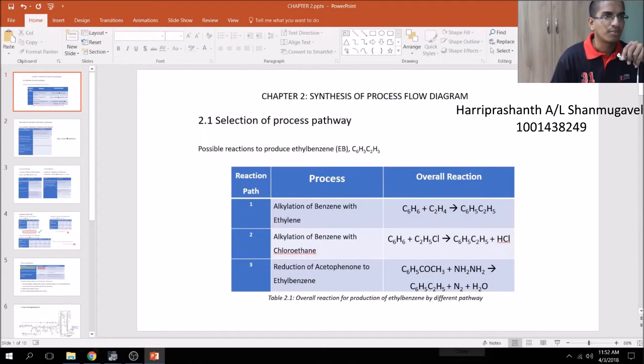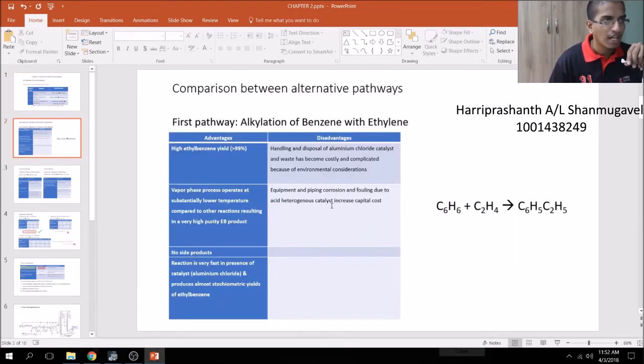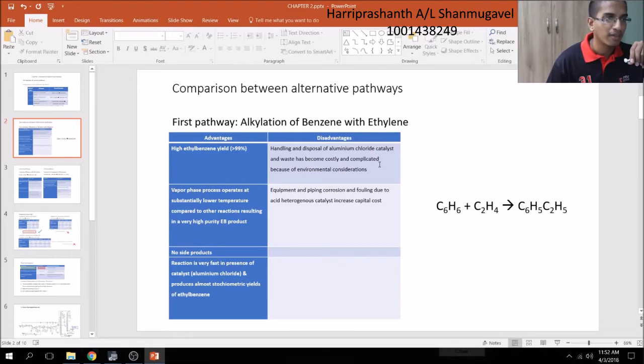Now I'll be talking about the future process for the production of ethyl benzene. There are three possible reactions to produce ethyl benzene. The first reaction is alkylation of benzene with ethylene. The second reaction is alkylation of benzene with chloroethane. The third is the reduction of acetophenone to ethyl benzene. I'll be comparing the advantages and disadvantages of the three reaction pathways.